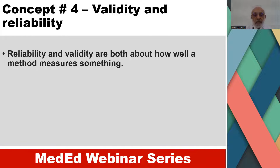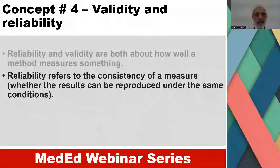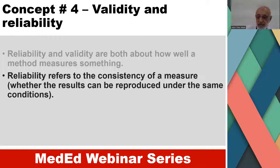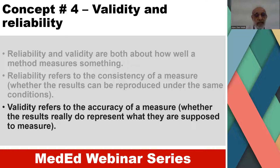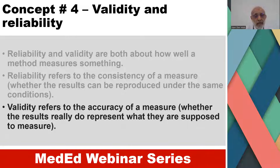Validity and reliability are both about how well a method measures something. Reliability refers to the consistency of a measure — whether the results can be reproduced under similar conditions — whereas validity refers to the accuracy of a measure, whether the results really do represent what they are supposed to measure, or whether the assessment method really measures what it is supposed to measure.